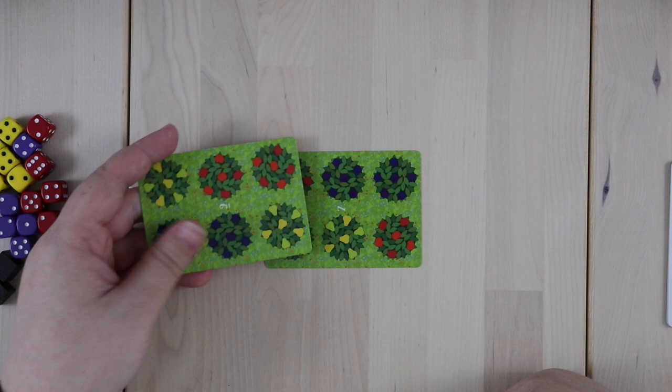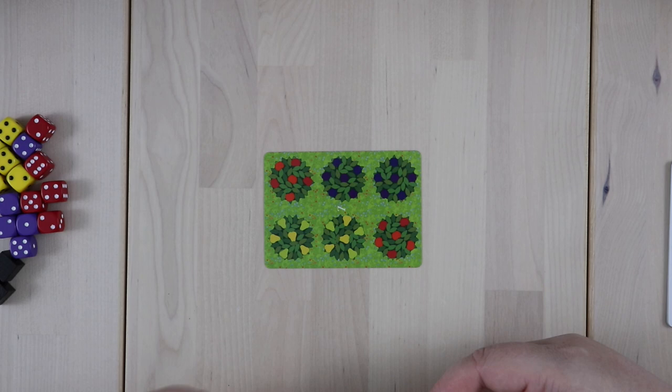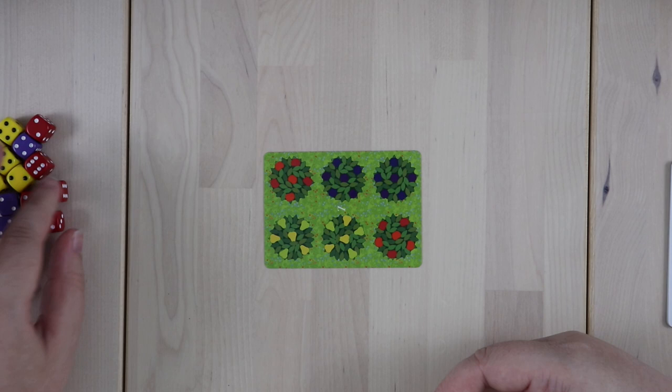So for example, I might want to play here so I can overlap a red and a yellow, or I might want to play here and overlap the blues. Because basically what we're doing is every time you overlap, you get to put a die down on the overlap trees. And then if you can overlap again, you get to increase the value on the die that you placed.